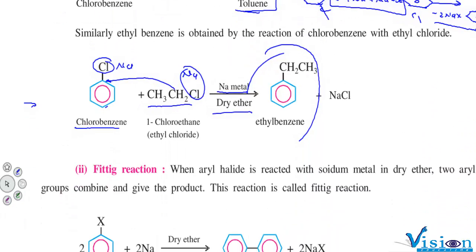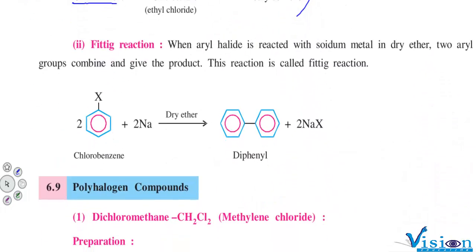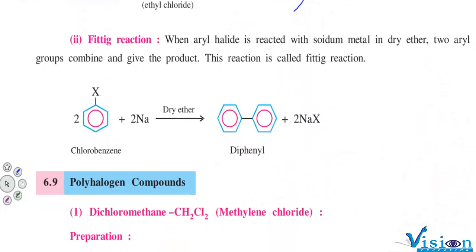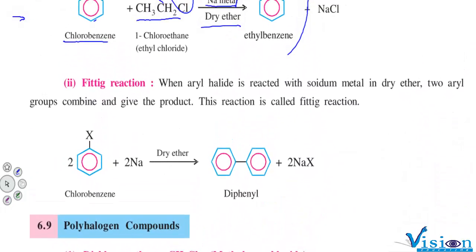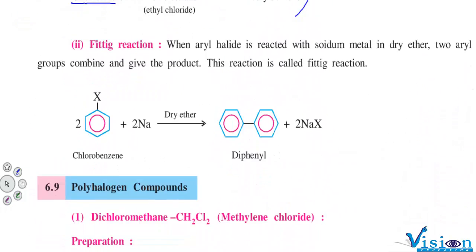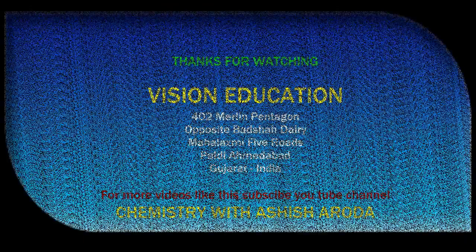So this was the third type of reaction of haloarenes. The next topic we are going to study is polyhalogen compounds. Thank you.